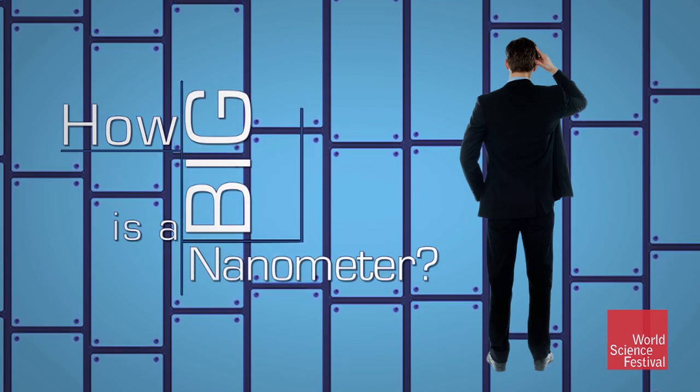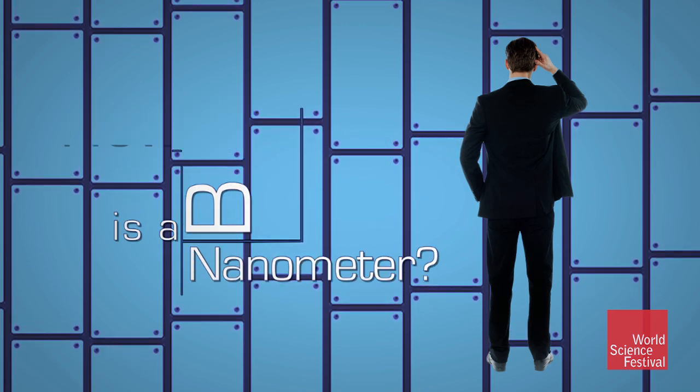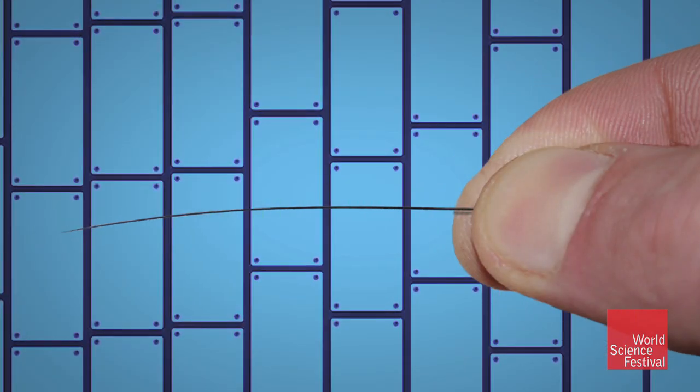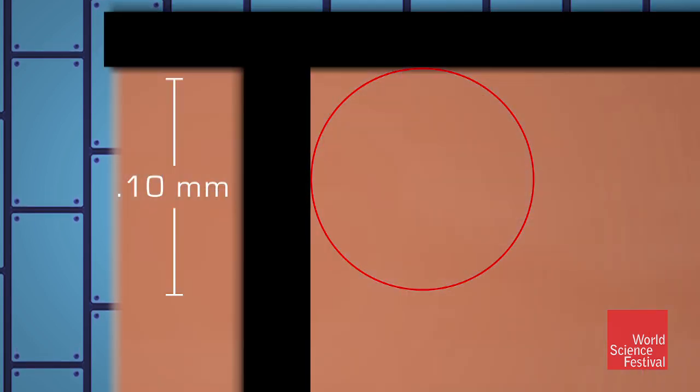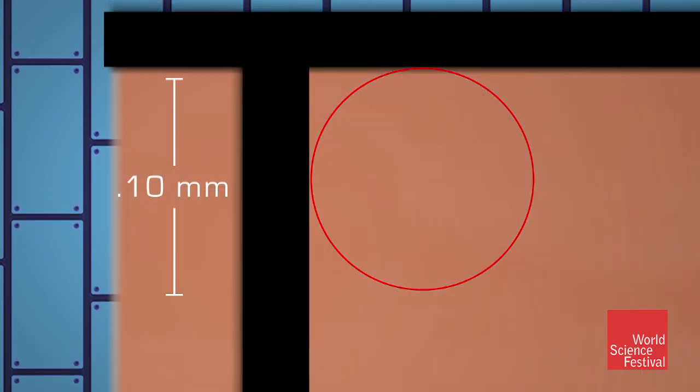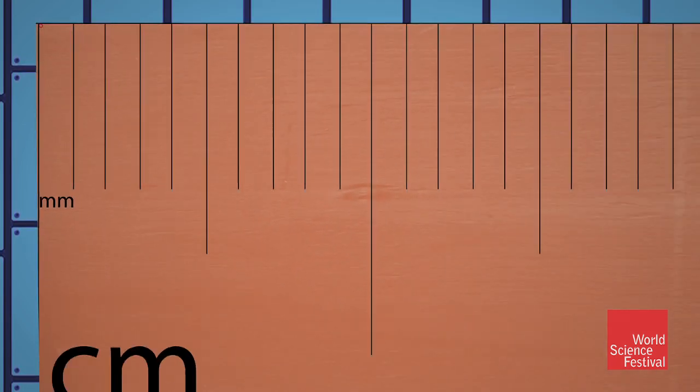Let's make the almost inconceivable nanoworld conceivable. The naked eye can see the diameter of a human hair. That's one-tenth of a millimeter, or 100,000 nanometers.